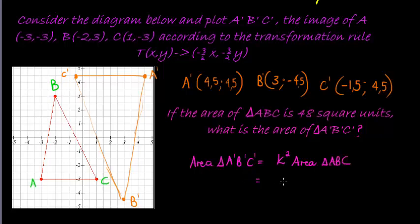So K squared is negative 3 over 2 squared times 48 square units, which gives me 9 over 4 times 48. 48 divided by 4 gives me 12 times 9 is 108 square units. Perfect!